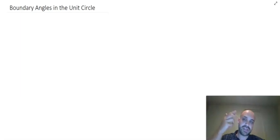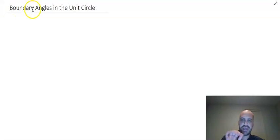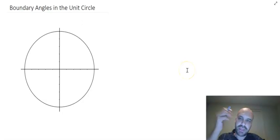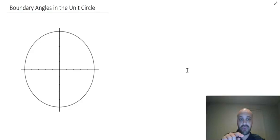If you've been paying attention to the video so far, this is going to be really simple. Boundary angles in the unit circle — what do I mean by boundary angles in the unit circle? I'm talking about points on the circle that aren't in quadrant 1, 2, 3, or 4.